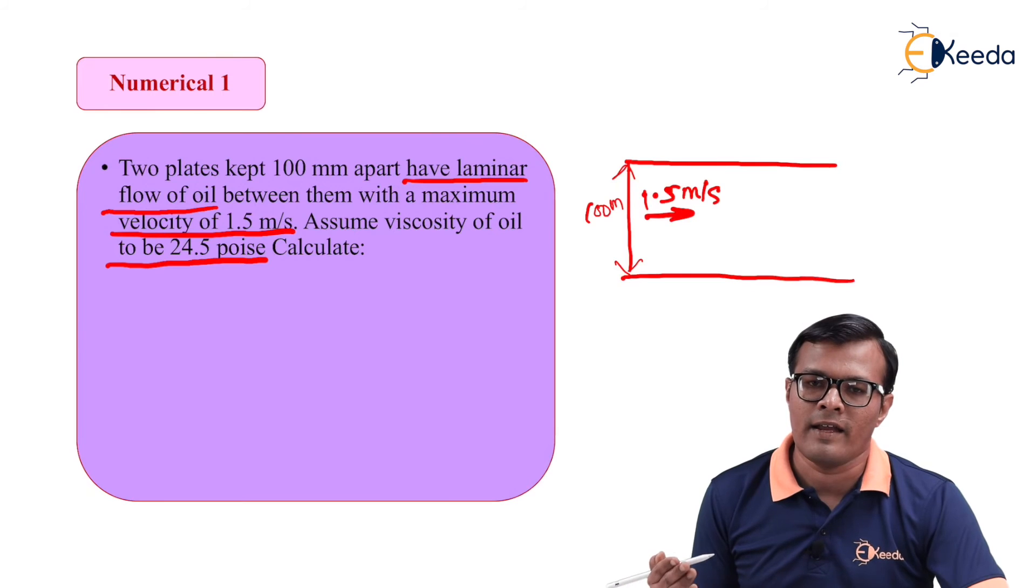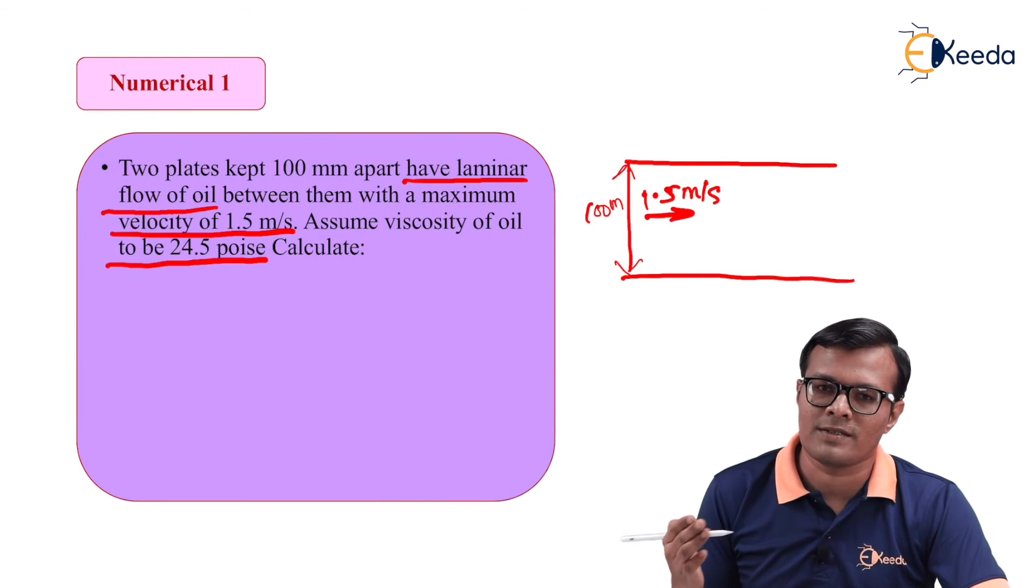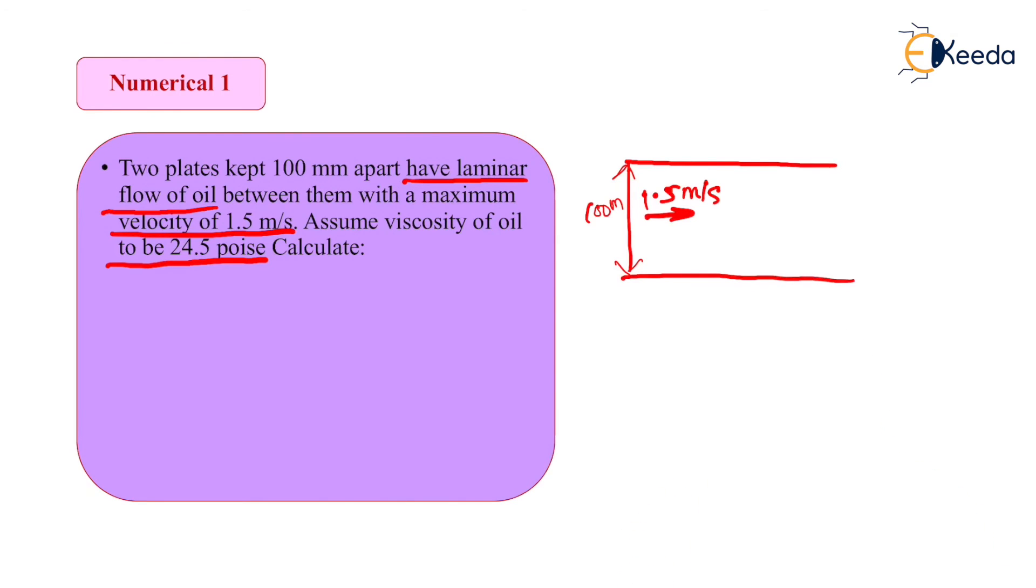We have to consider it in our regular unit that is Ns per m². The relation is 1 Ns per m² is equal to 10 poise. So, it is asked to calculate discharge per m width. So, we are considering width value as 1 m and corresponding discharge is asked.